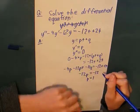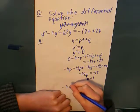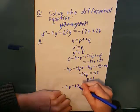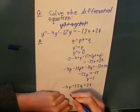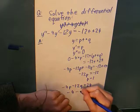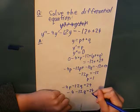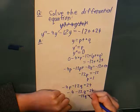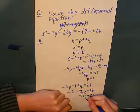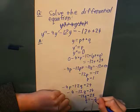Equating the coefficients of the constant term gives minus 4p minus 12q equals 24. Now, p is 1, so that's just minus 4 minus 12q equals 24. So, minus 12q equals 28. So, q equals minus 7 over 3.